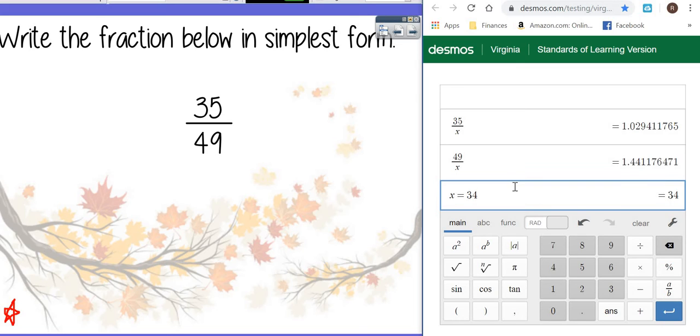34 gives us decimals, that's not going to work. 33, 32, 31, 30 all give us decimals. So we're going to go down to 29. This one's going to take a while, just to show you how this works.